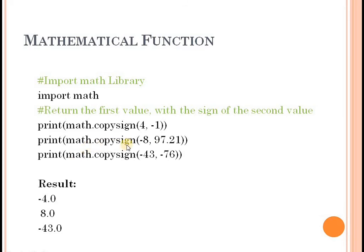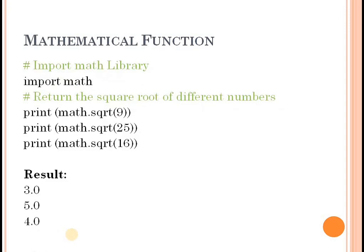Next, math.copysign(-8, 97.1) — the value of 8 becomes positive, so positive 8 is displayed. After import math, we use sqrt for square root. The math module can be used to perform various mathematical operations using its built-in methods.